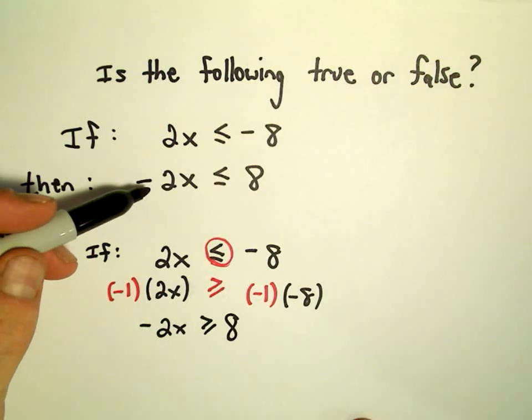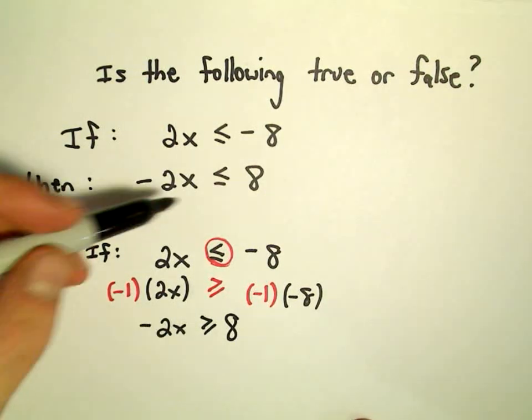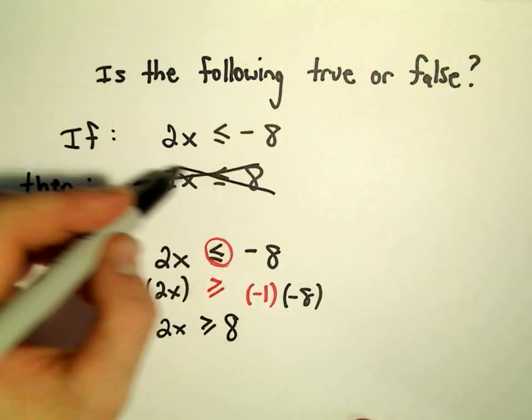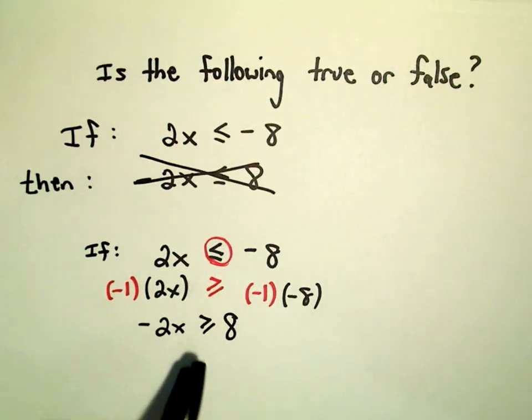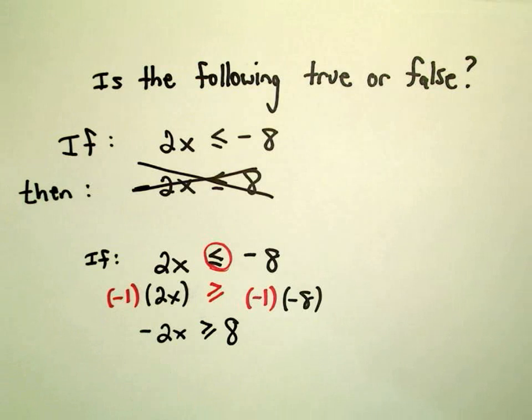So we would actually get this statement, and it wouldn't be correct to say that -2x is less than or equal to 8, because it should be -2x is greater than or equal to 8.